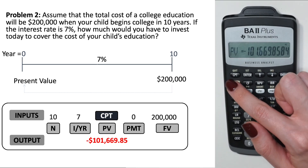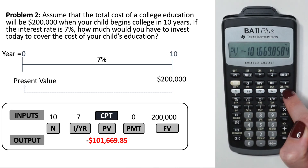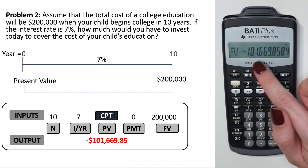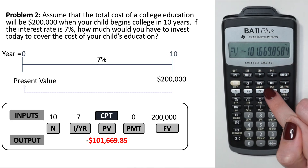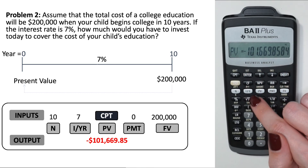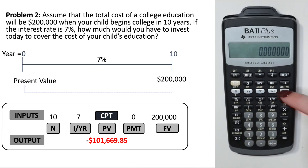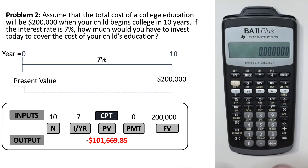A caution: if you accidentally press Future Value after solving, you'll overwrite the stored value — so don't do that. Quit out, then do 2nd Clear Time Value of Money and 2nd Clear Work before starting the next problem.